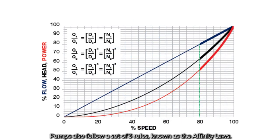Pumps also follow a set of three rules known as the affinity laws. Assuming the size of the impeller is kept constant, then the following statements are true: Flow is directly proportional to the speed, head is proportional to the square of the speed, and power is proportional to the cube of the speed.